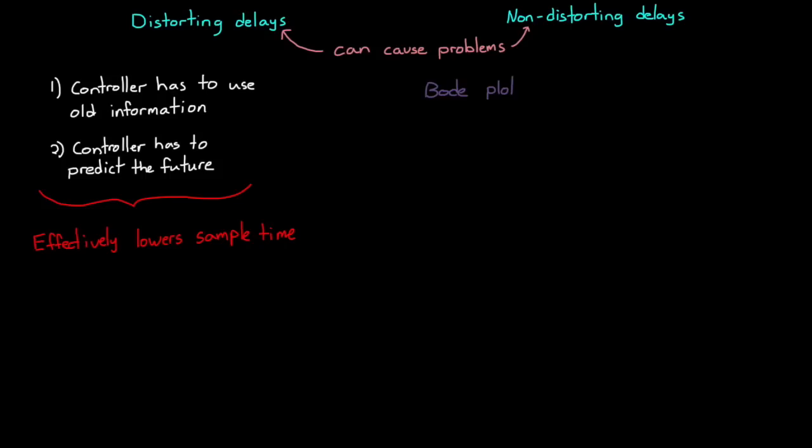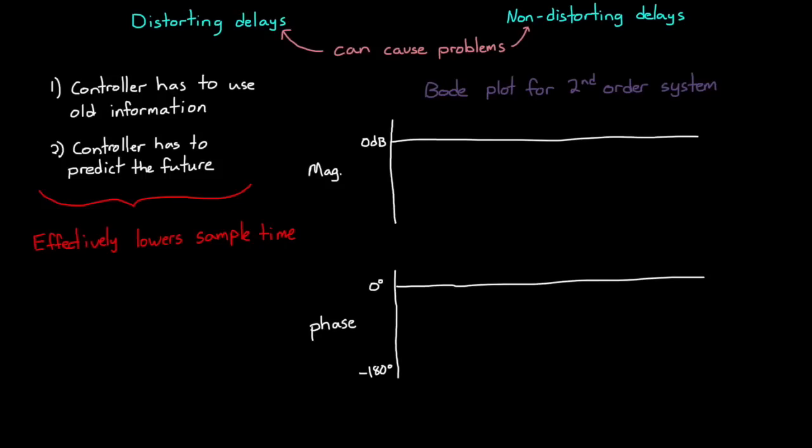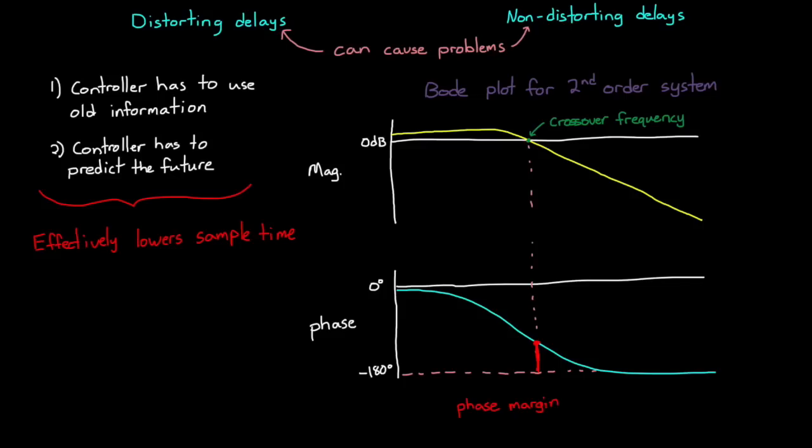You can see why by looking at the Bode plot of an arbitrary second order system. The crossover frequency is where the magnitude plot crosses the 0 dB line. And at that frequency you can see how much phase margin your system would have if you created a feedback loop around this second order system. In this case we have some positive phase margin, so our closed loop system would be stable.